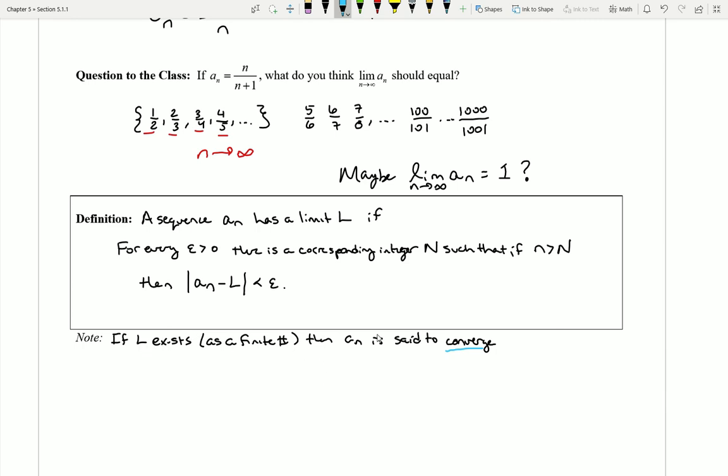So we're going to reuse this language that we saw with improper integrals again here in sequences. This time, if I have a limit of a sequence, I'll call that sequence convergent, or say that it converges. And then otherwise we say that a sub n diverges. So I have these repeated terms or repeated phrases that I'm going to be using here in this section.